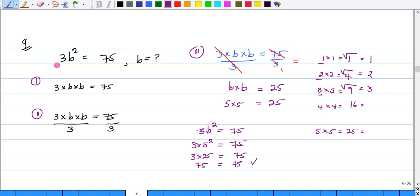Number 9. Number 9 says, if 3b squared is equal to 75, what then is b?